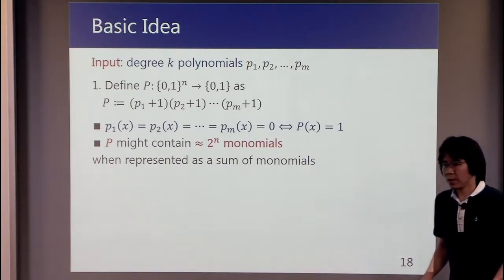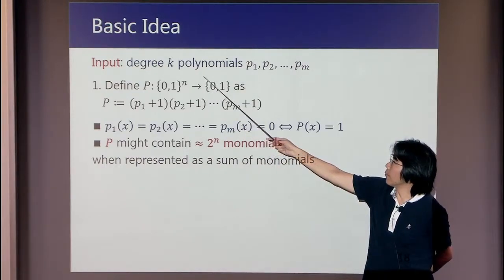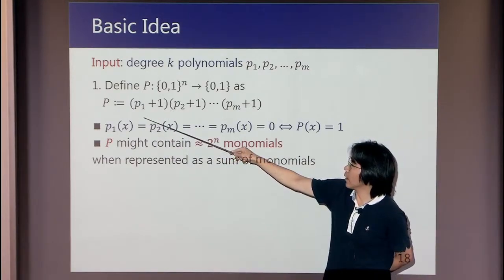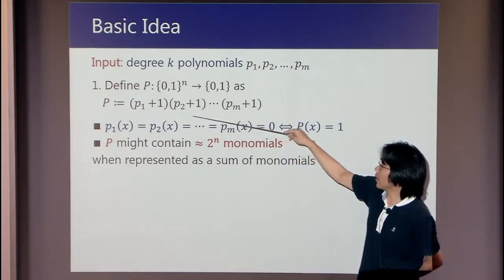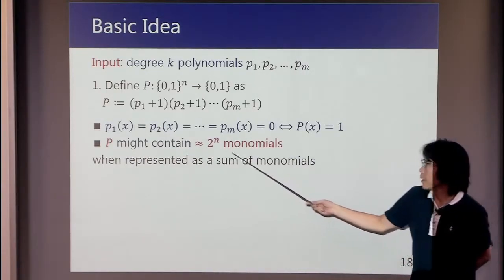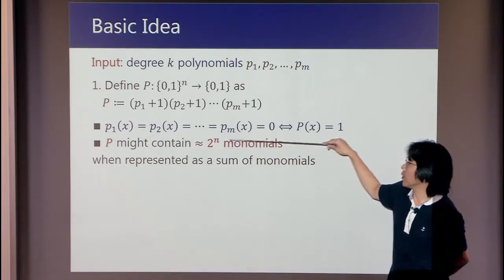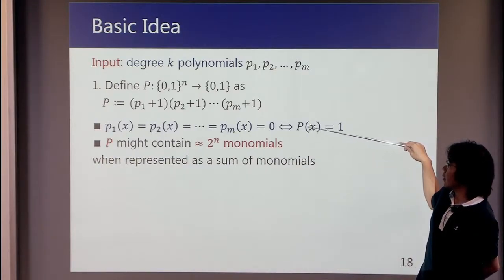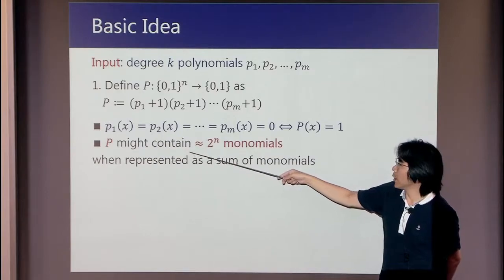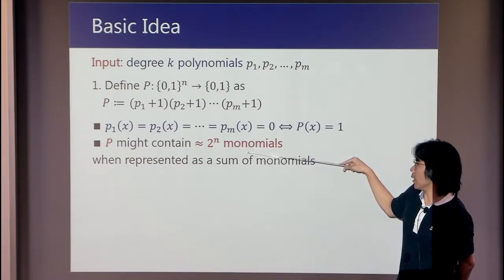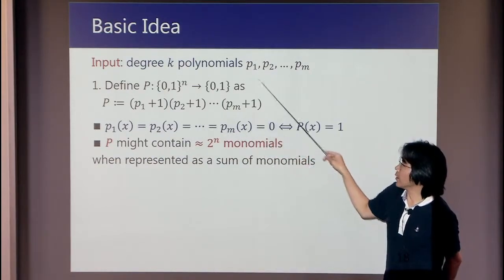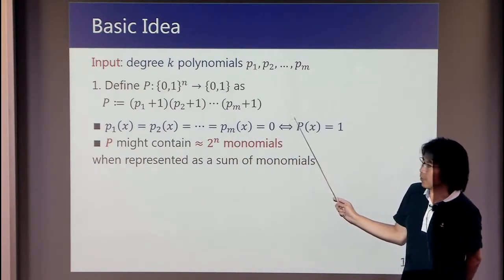This is the basic idea of our algorithm. Our input is degree k polynomials. We define polynomial P as a product of (p₁+1) through (pₘ+1). Then you can see all of these polynomials are zero if and only if P(x) is 1. You can also see that P might contain 2^n number of monomials when it is represented as a sum of monomials because this is a degree n polynomial.